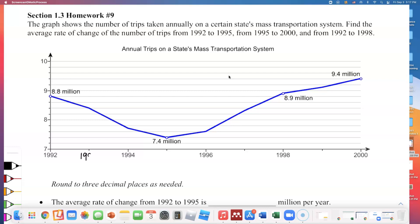This must be 1993, 1995. So the first thing they want us to do is find the average rate of change from this point right here to this point down here. From 1992 to 1995.